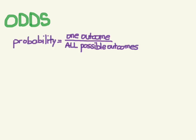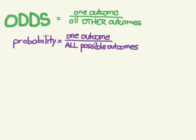Another measure of likelihood is odds, as opposed to probability. Probability is often expressed as a percentage or a decimal, and it's one outcome — the outcome that you want — divided by all possible outcomes, including that one. Odds, by contrast, is one outcome divided by all other outcomes, not including the one you're looking for.